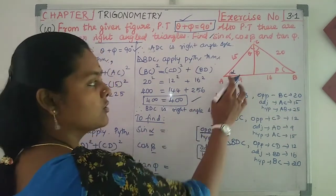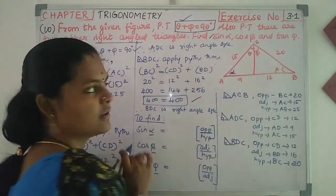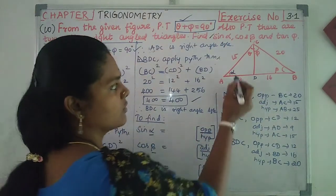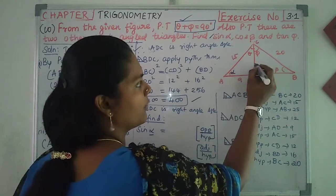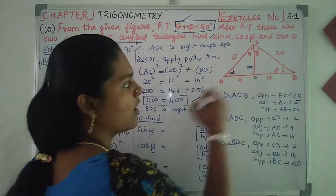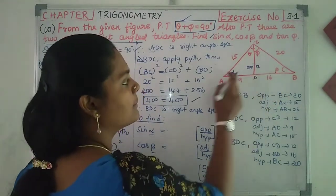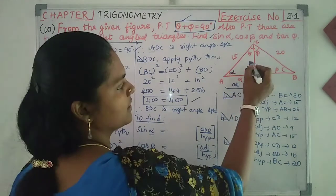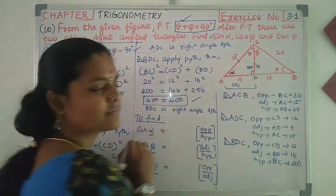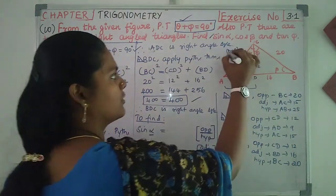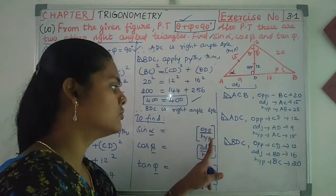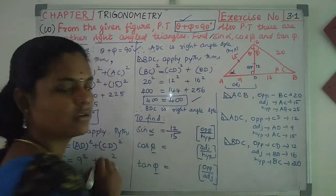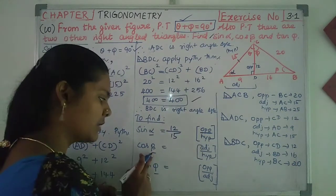Sin alpha: alpha is on the left side triangle. The opposite side value is 12, divided by the hypotenuse value. So sin alpha equals 12 divided by the hypotenuse.